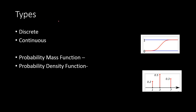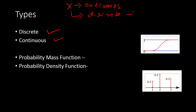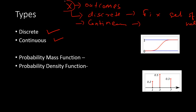Probability distributions broadly are divided into two types: discrete distributions and continuous distributions. We categorize them based on the random variable X, which takes the outcomes of a random experiment. The random variable X could take discrete values — a fixed set of values — or it could take continuous values within certain intervals. Based on the values carried by the random variable X, we categorize these probability distributions.